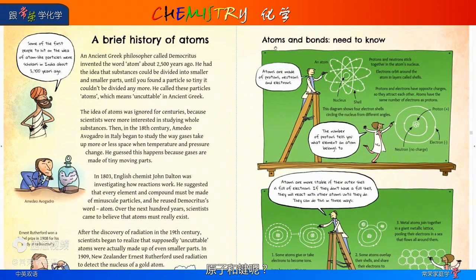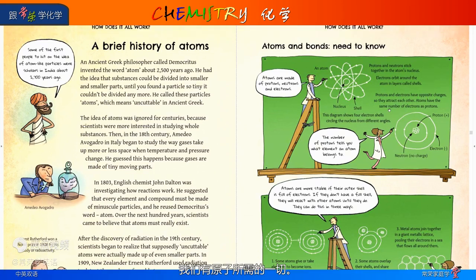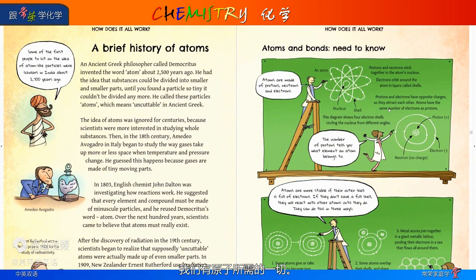What about atoms and bonds? Here's all you need to know. Here we have an atom — we've got a nucleus, shells, and electrons; everything you need for an atom. This was the atom model from about ten years ago, and this is the atom model nowadays.